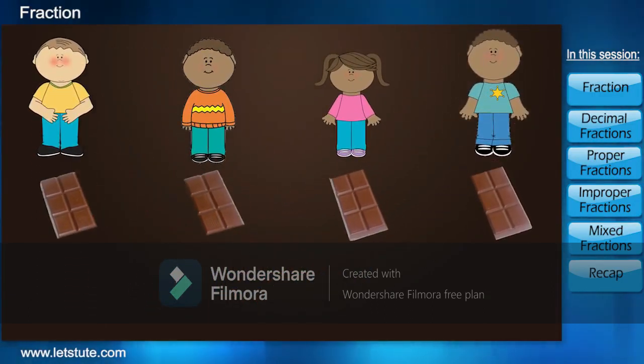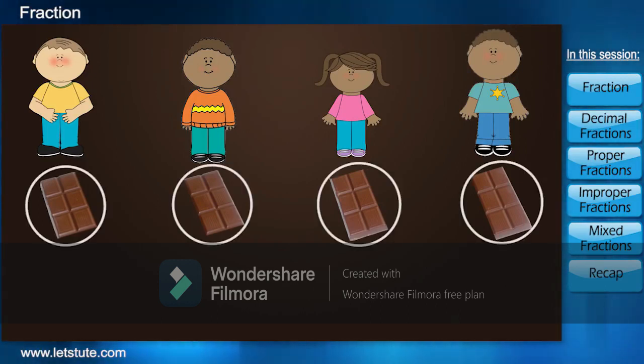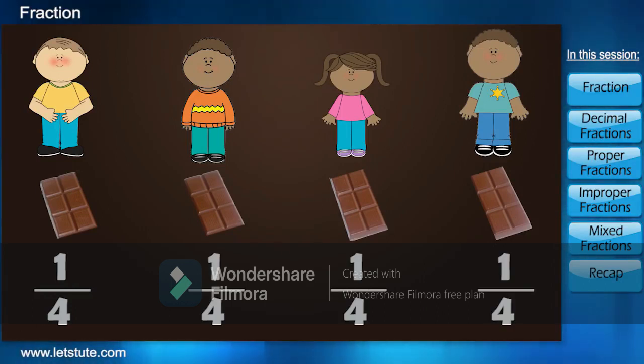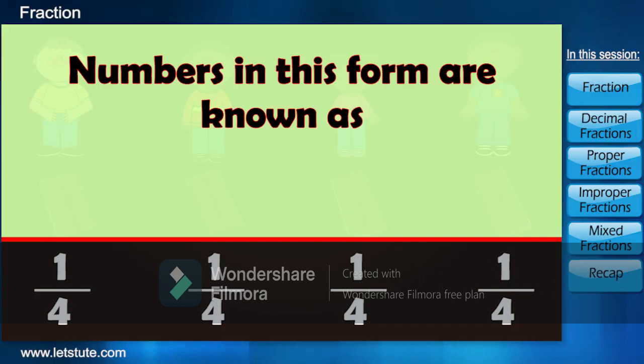Nice. You have divided one whole chocolate into four equal parts. So each one of you will get one part out of the four parts of the chocolate. Or can we say that each one of you had one fourth part of a chocolate? And numbers in this form are known as fractions.